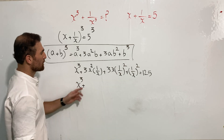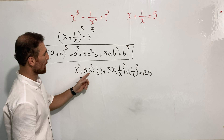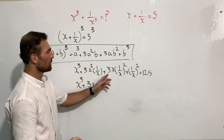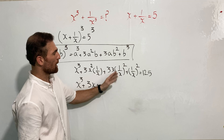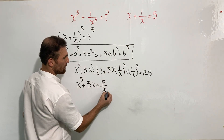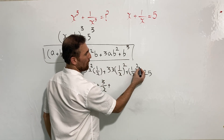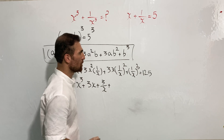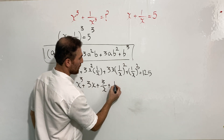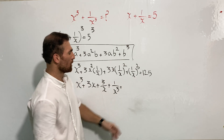Rewriting the left side: x cubed, plus three times x squared times one over x gives three times x, plus three times x times one over x squared gives three over x, plus one over x cubed. And the right side is 125.